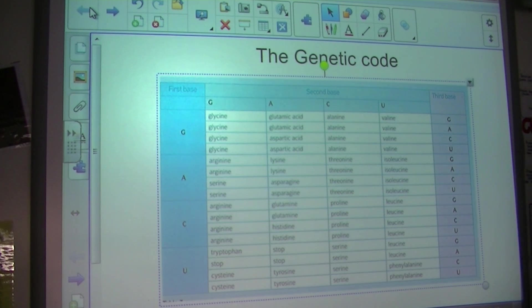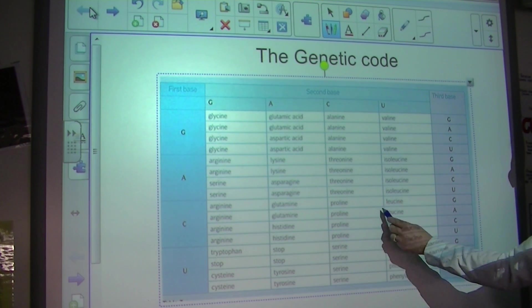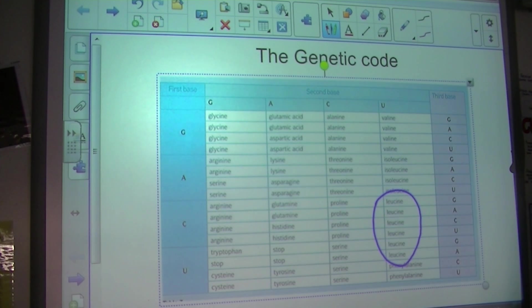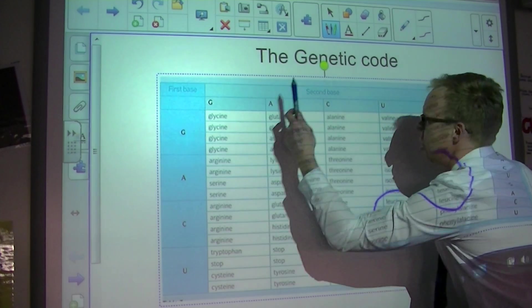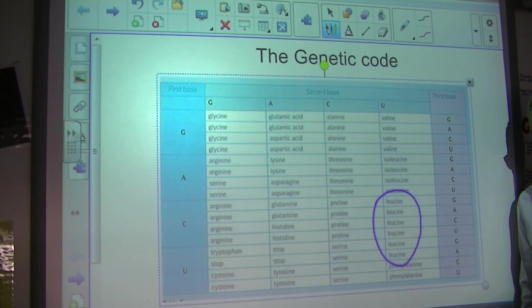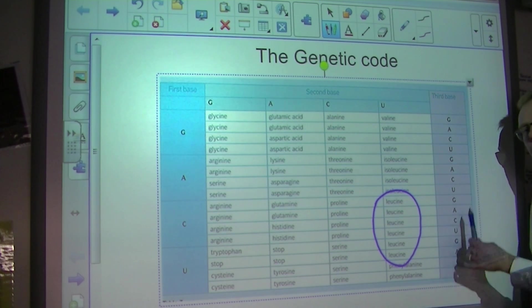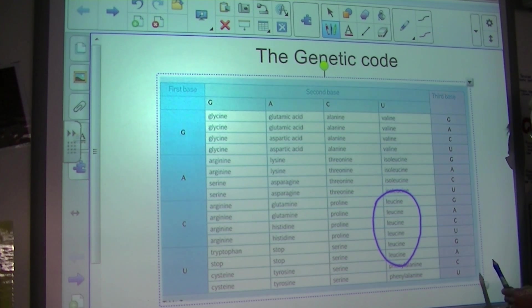You will see that leucine is a very popular amino acid. Because in actual fact, there are one, two, three, four, five, six different triplet codes that all code for lysine. Or leucine. And that is what is meant by degenerate. That each amino acid can have more than one triplet code that codes for it.